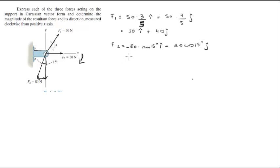When you calculate this you're going to get negative 20.7i minus 77.27j.